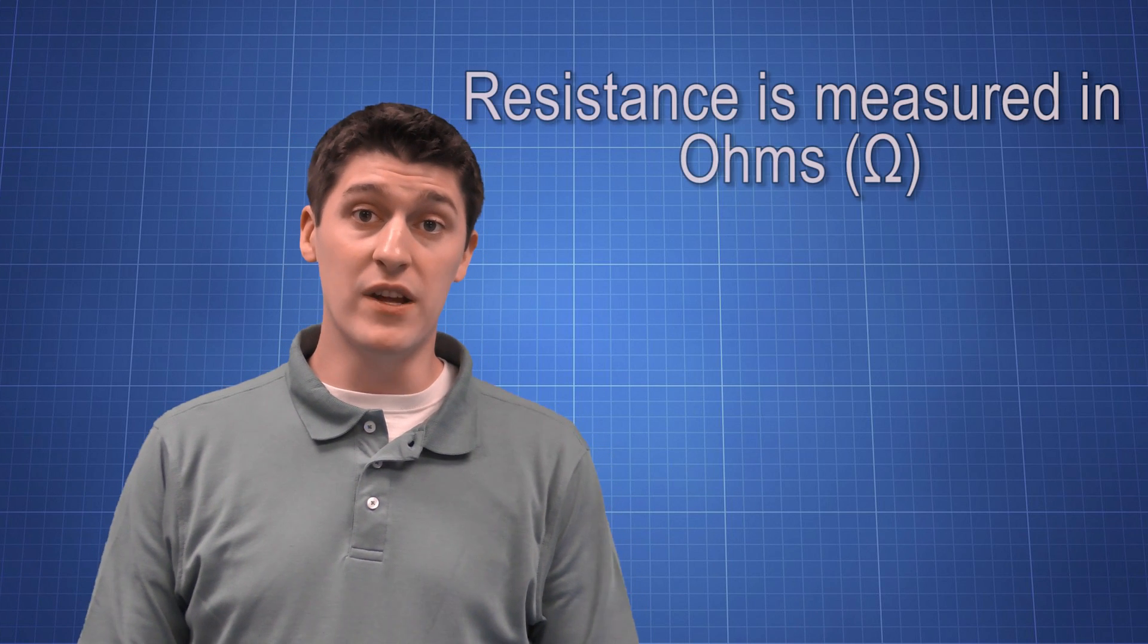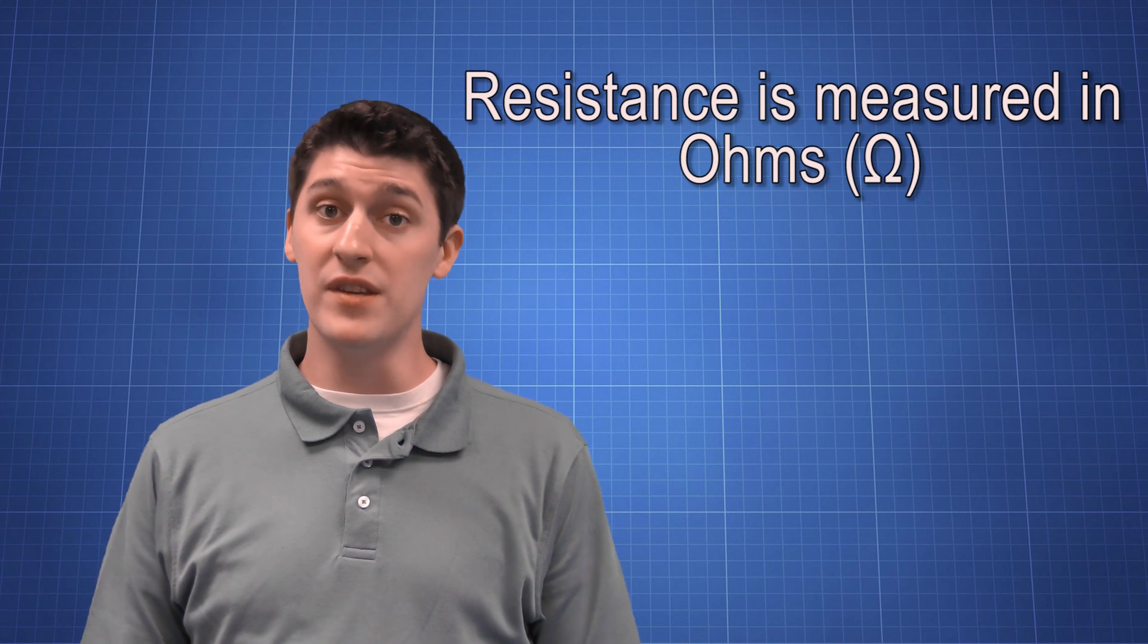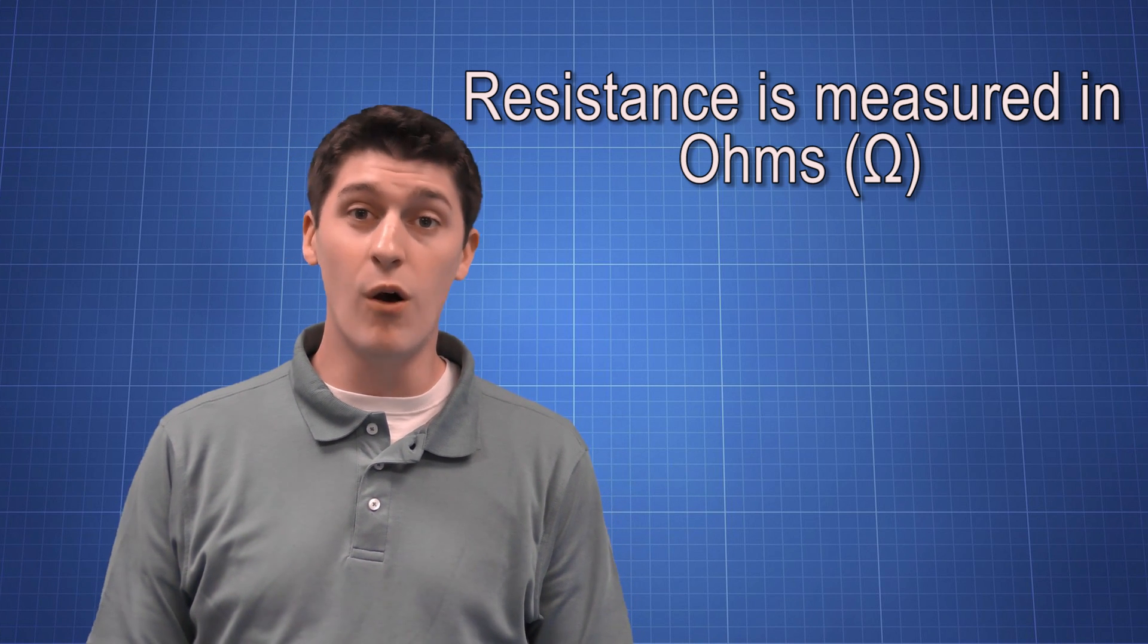For the scope of this class, we're going to ignore internal resistance and focus on the resistance that's provided by what's using the electricity. The more things that we have on our circuit, the slower the current is going to move. The more resistance that's blocking the current, the slower it's going to go. It's like a rock in our water analogy. Resistance is measured in a unit called ohms, and it has a special symbol. We use the Greek symbol omega for resistance. So, resistance is measured in ohms.